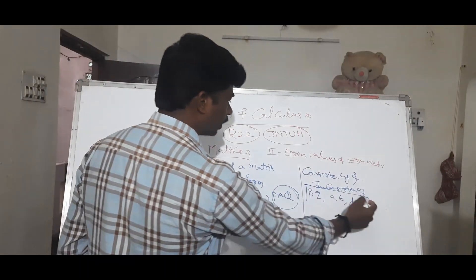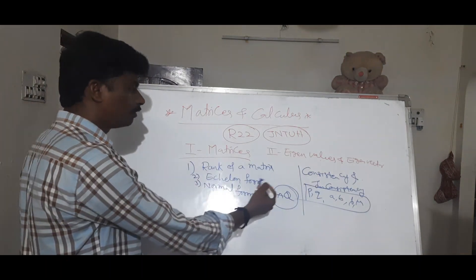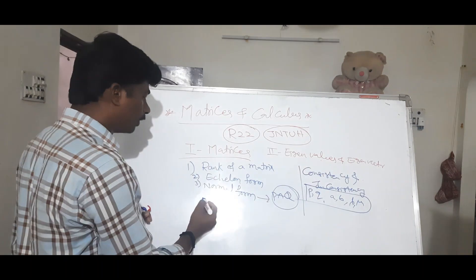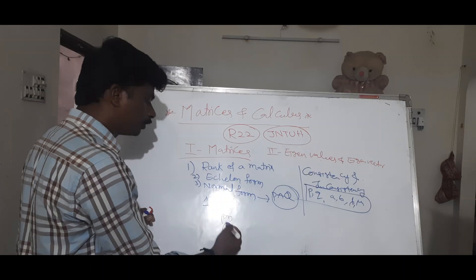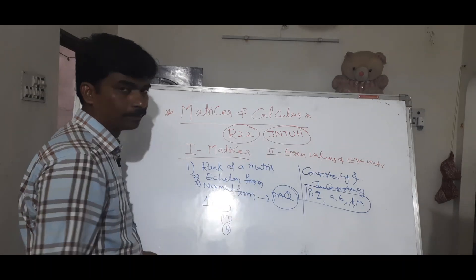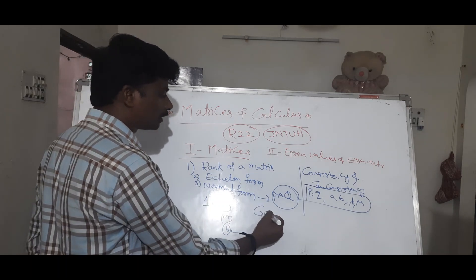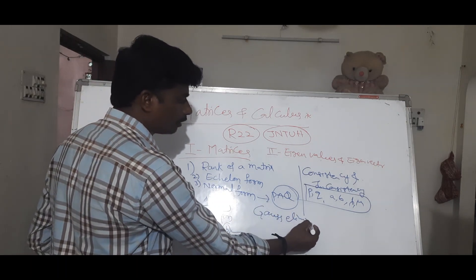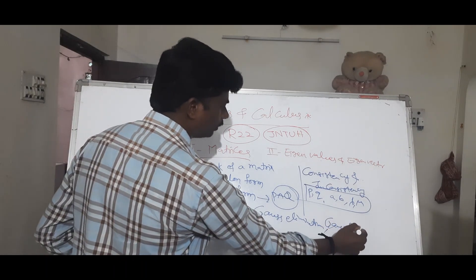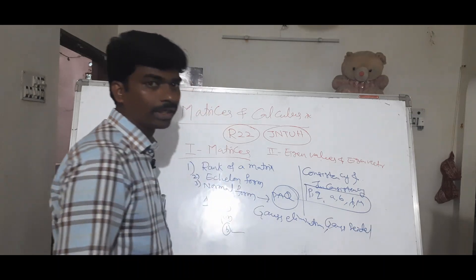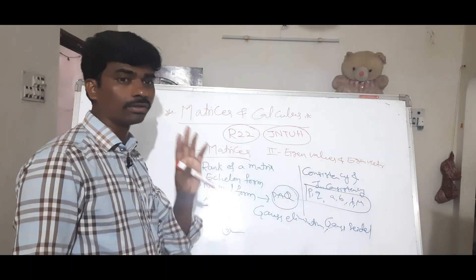What problems can you choose? The rank of A versus rank of augmented matrix AB. Topics include Gauss elimination and the Gauss-Seidel method. In Gauss elimination and Gauss-Seidel, we solve a few problems.